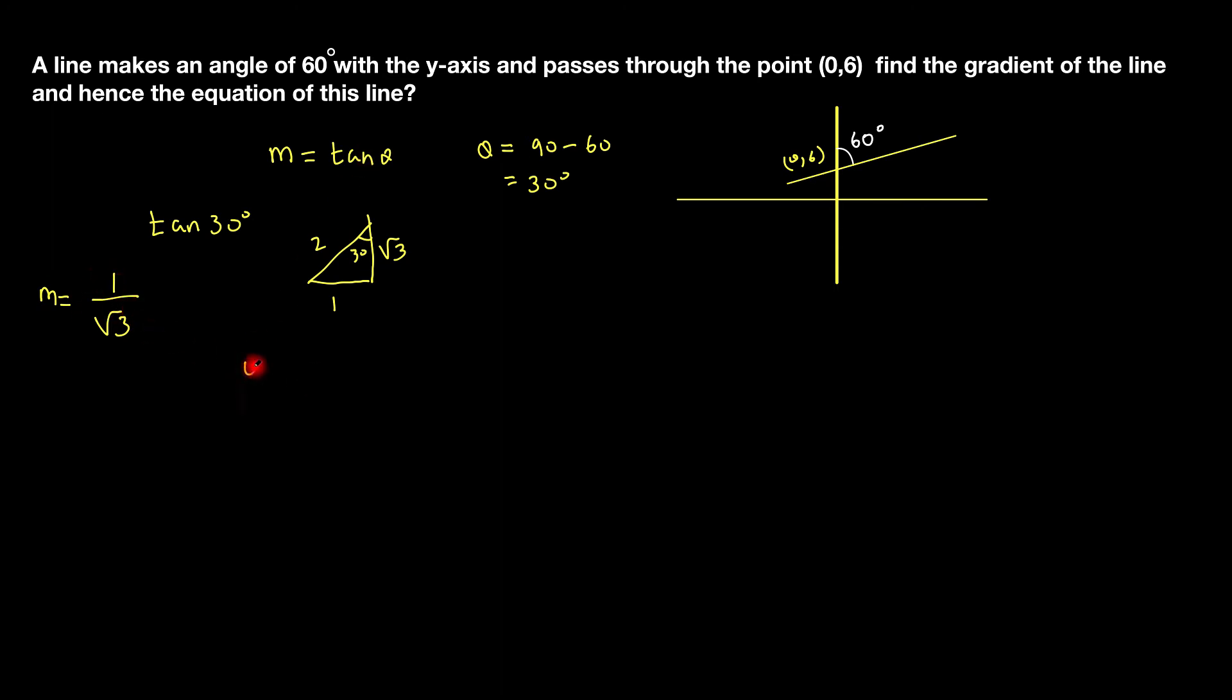Next thing I'm going to do is use y minus b equals m(x minus a) to get the equation of the line. My point is (0,6), which means a is 0 and b is 6. So y minus 6 equals 1 over root 3 times (x minus 0), and that would then simply give me 1 over root 3 times x. Bringing the 6 to the side will be plus 6, and that would be my final answer.